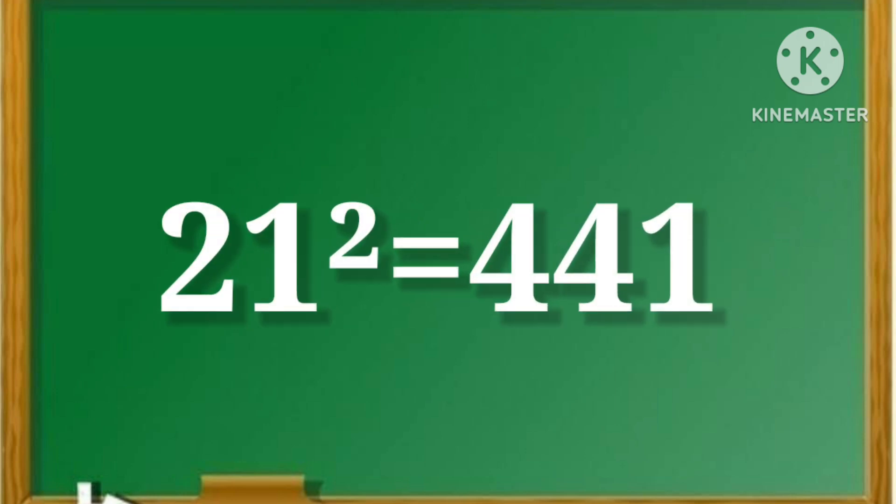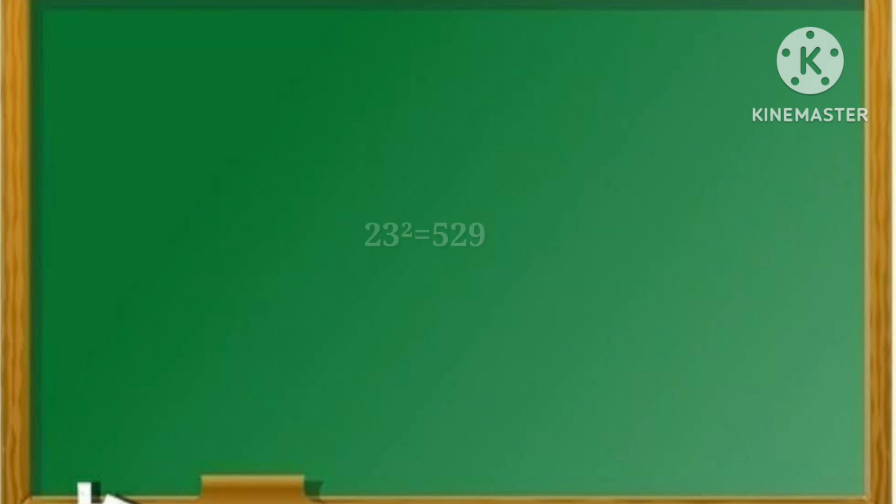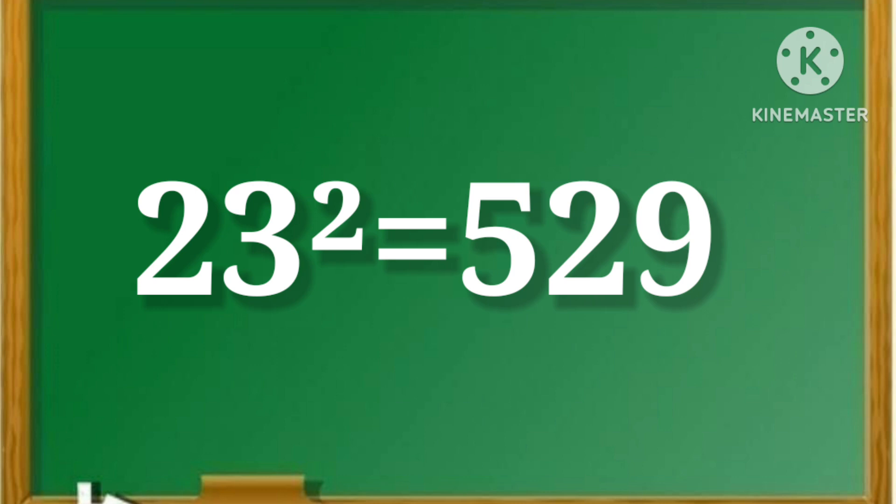21 square is equal to 441. 22 square is equal to 484. 23 square is equal to 529.